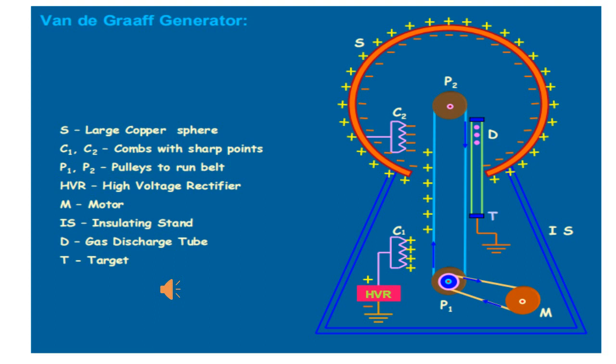When the charge on the sphere is very high, the leakage of charges due to ionization of surrounding air also increases. Maximum potential occurs when the rate of charge carried by the belt is equal to the rate at which charge leaks from the shell due to ionization of air.